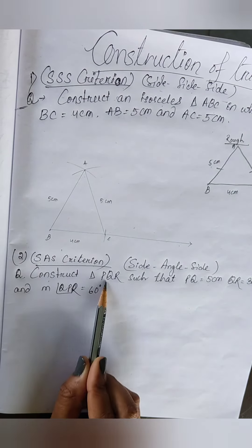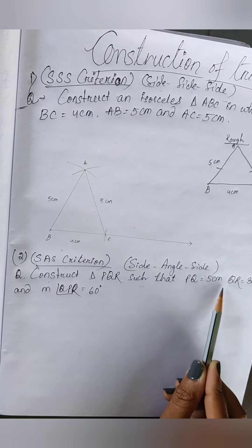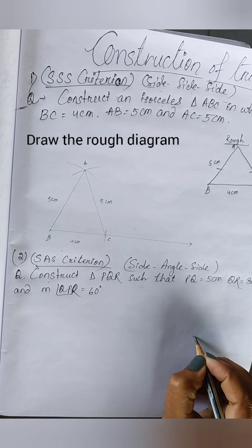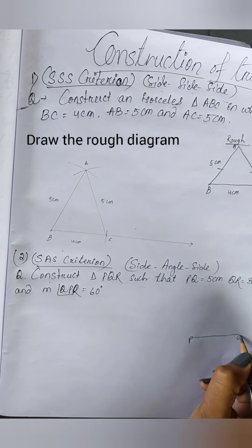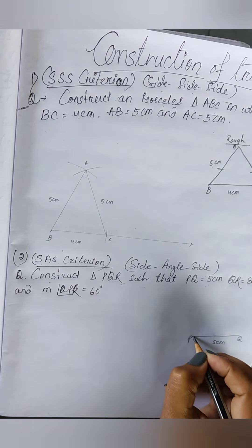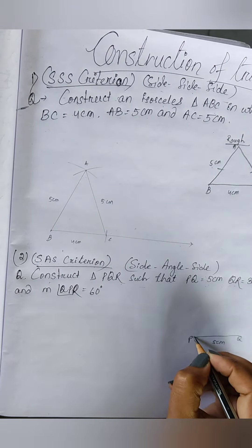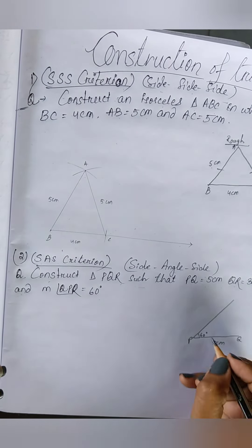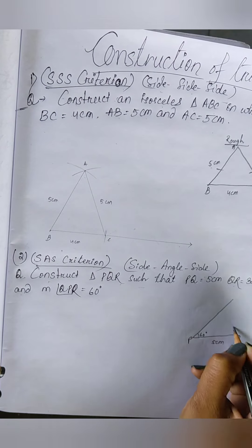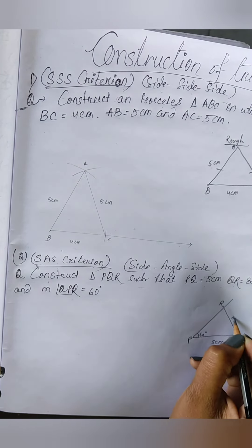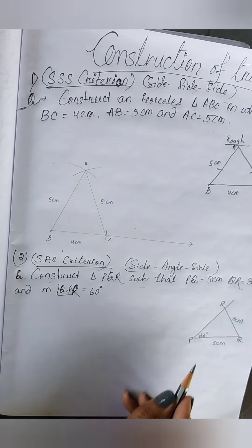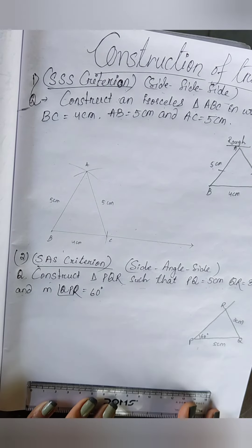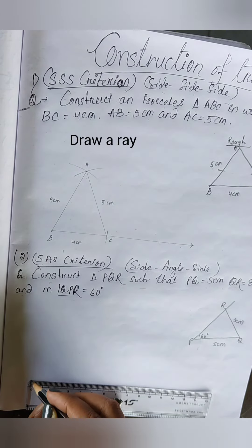Next is the SAS criterion — side-angle-side. Here PQ = 5 centimeters, angle P = 60 degrees, and PR = 3 centimeters. Let's draw the ray for this construction.